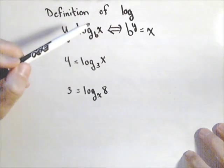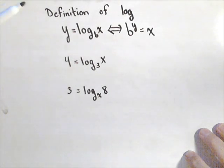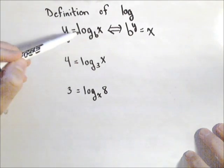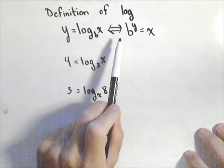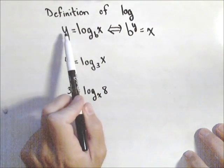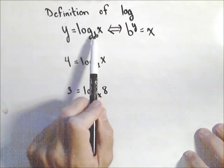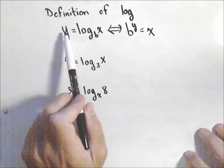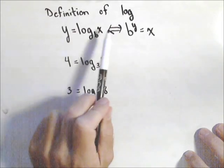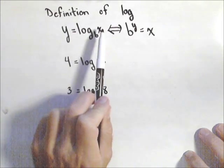So the definition of log, well remember it's the inverse of an exponential function. So y equals log base b of x is the inverse of b to the y equals x. So the base of the log and the base of the exponential are the same. Log gives you the exponent as an output and so we have b to the y equals x.